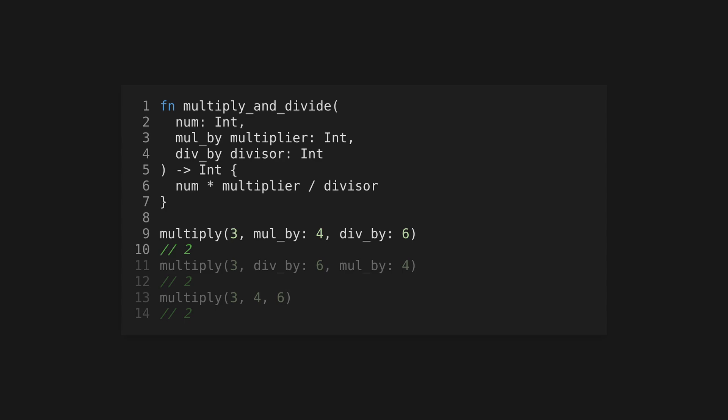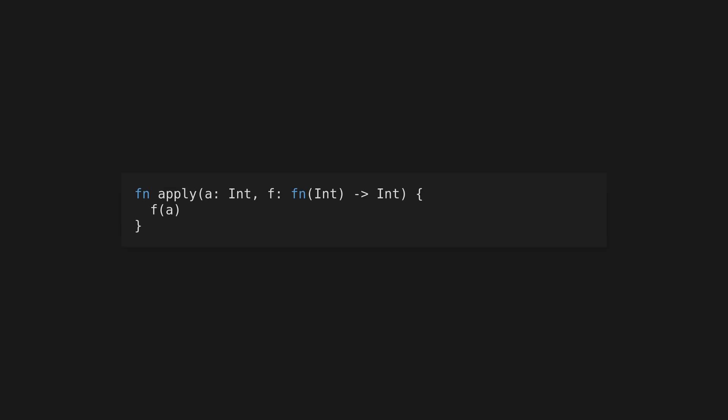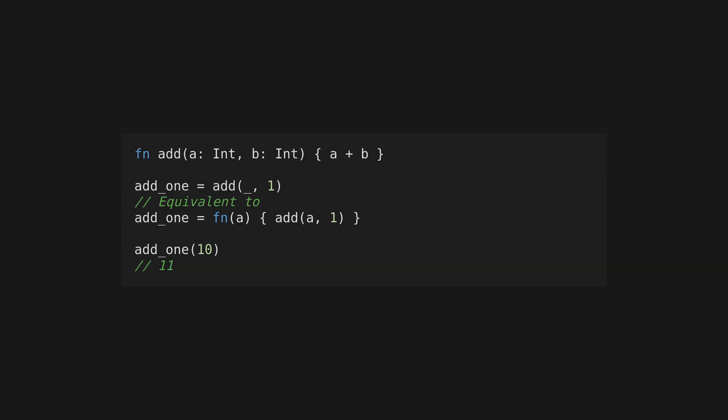Add labels to your function arguments to give parameters an external name as well as an internal one. Arguments with labels can be passed in any order, or the labels can be omitted entirely. Anonymous function literals can be defined by leaving out the function name. Functions are typed using syntax which shows the parameter types and the return type. Like most functional languages, functions in Gleam can be passed as parameters and assigned to variables. If you're defining a single argument anonymous function that only passes that argument into another function, you can use the shorthand function capture syntax.